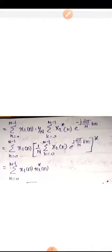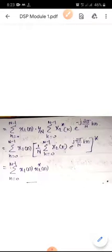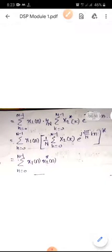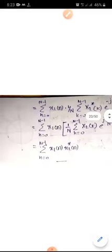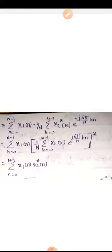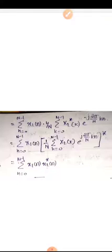The inner summation (1/N) · sigma K=0 to N-1 of X2*(K) · e^(−j2π/N · K) equals X2*(N). Therefore the right-hand side becomes sigma N=0 to N-1 of X1(N) · X2*(N), which is equal to the LHS. Hence RHS equals LHS, and Parseval's theorem is proved.